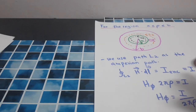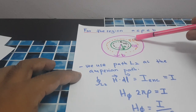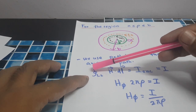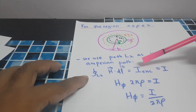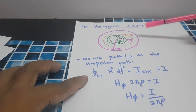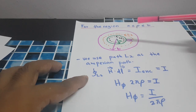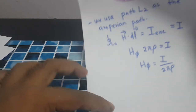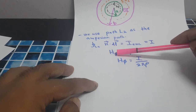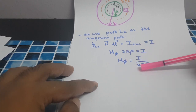For the region ρ between A and B, the Amperian path is L2. The closed integral of H·dL equals I enclosed, which equals I. I enclosed equals I because the full current I flows out of the page in the positive z-direction between radius A and B, so there is no need to compute I enclosed separately. We directly find H_φ: H_φ · 2πρ = I, so H_φ equals I / (2πρ).